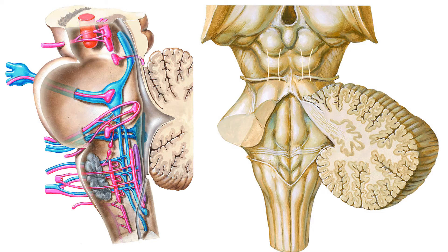Regarding the measurement of the red nucleus: its transverse diameter is about 5 mm. It is situated posterior to the substantia nigra, and it extends from the level of the caudal part of the superior colliculus to the subthalamus.